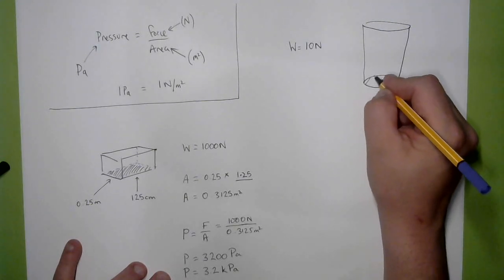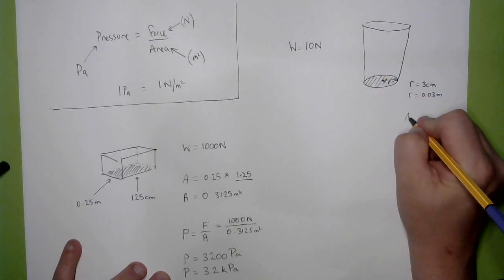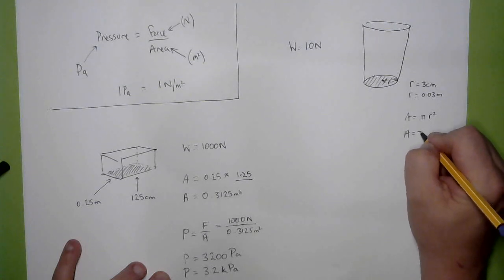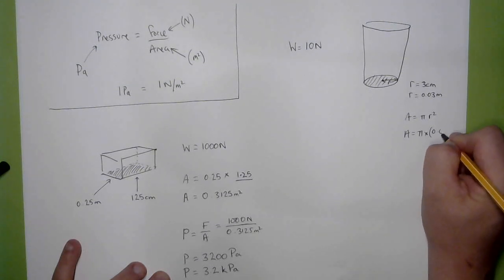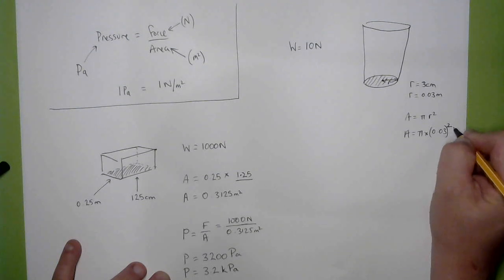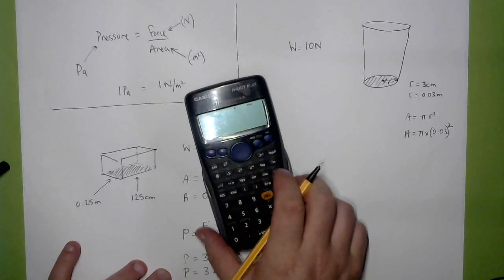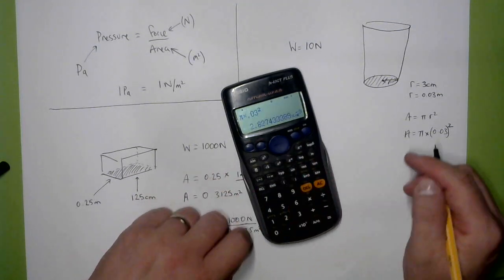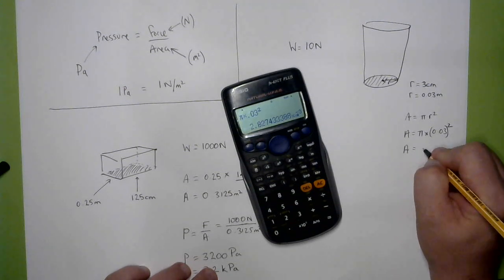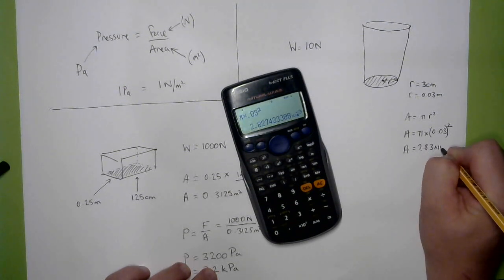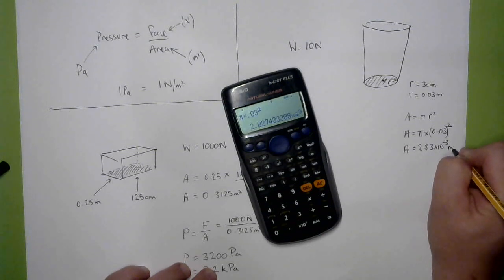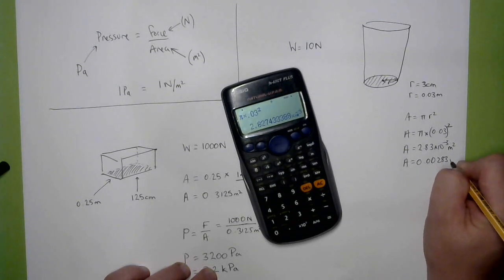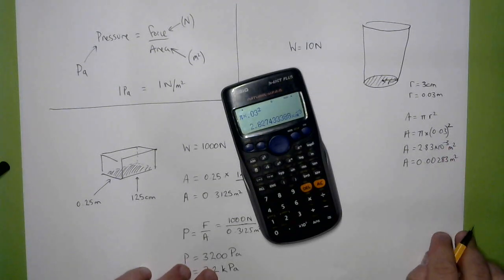We know the area of the circle is pi r squared. So the area of the drinks glass is pi multiplied by 0.03 squared. So the area is 2.83 times 10 to the minus 3 square metres. If we wanted to write that out, those two things are the same, two quantities are the same.